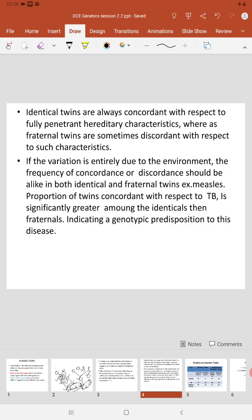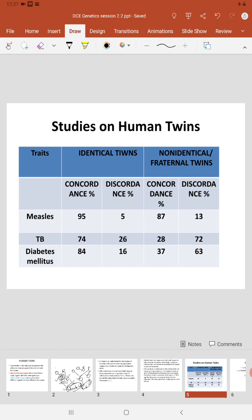In this table you can see the traits which were studied: measles, incidence of measles among identical and non-identical twins, and TB and diabetes mellitus. When we compare, the proportion of twins concordant with respect to TB is significantly greater among identical twins than among fraternal twins, indicating that there is genetic predisposition to this disease. That means the carriers of some genotypes are more likely to get this infection than others.